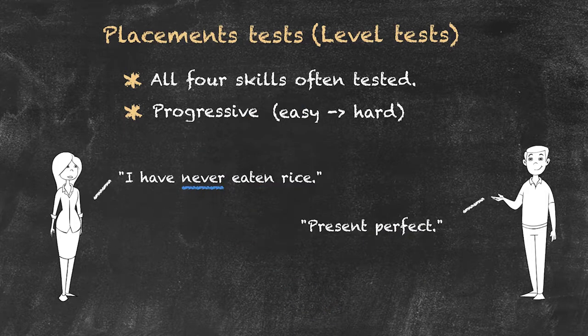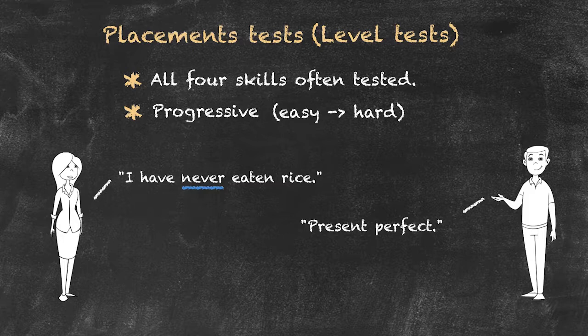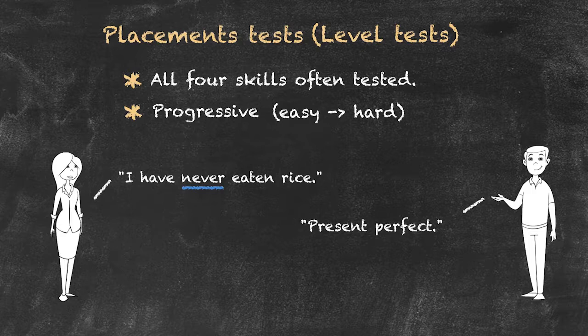That will then get us up to the higher levels, and we can ask some general questions to find out whether we think they should be in the intermediate or the upper intermediate groups. So it tends to be progressive, starting easy — the further the students go, the higher the level they are actually at.